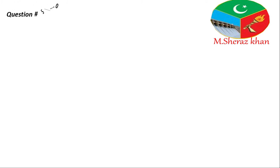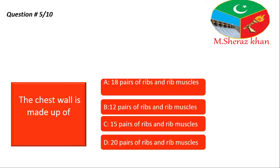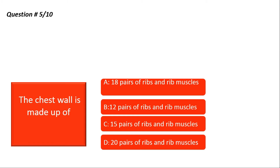Question number five: the chest wall is made up of — ke jo hamari chest hai, uske jo walls hain, agar hum inner side par dekhen to ye aapke paas kis cheez se bani hoti hai? Options: A — 18 pairs of ribs and rib muscles, B — 12 pairs of ribs and rib muscles, C — 15 pairs of ribs and rib muscles, D — 20 pairs of ribs and rib muscles. I give you 10 seconds.